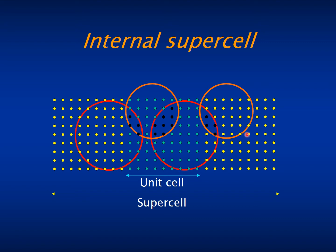What SIESTA does is to increase the unit cell into a larger supercell and to repeat the basis orbitals as if they were different in the whole supercell, and it calculates the overlaps between the different repetitions of the basis orbitals. This supercell is in principle transparent to the user, but it is working inside the program all the time.